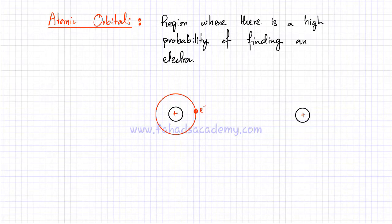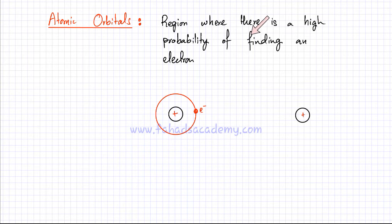In this lecture we're going to learn about atomic orbitals. The definition of an atomic orbital is that it's a region where there's a high probability of finding an electron. We're going to build this concept of what an orbital is and what it looks like.